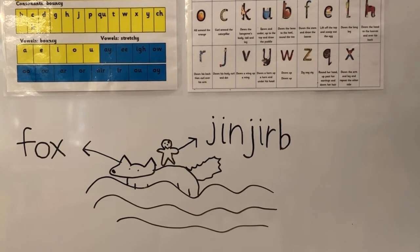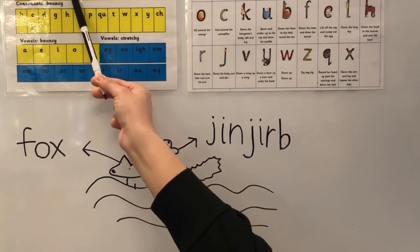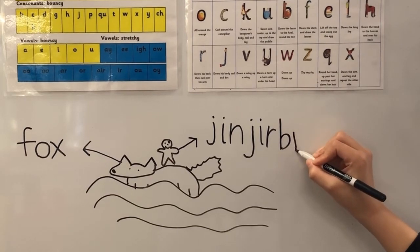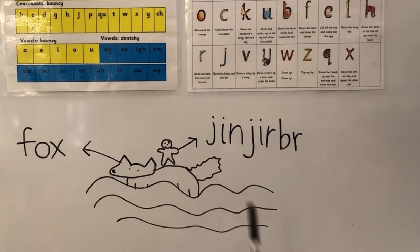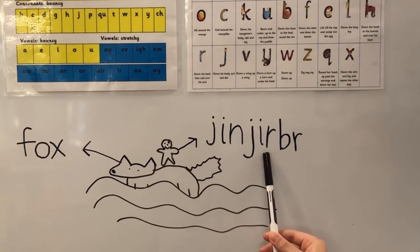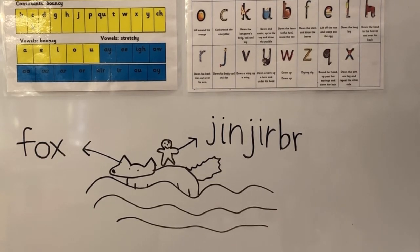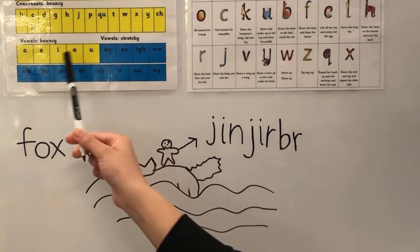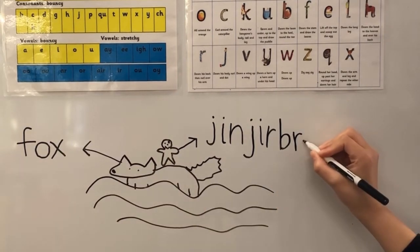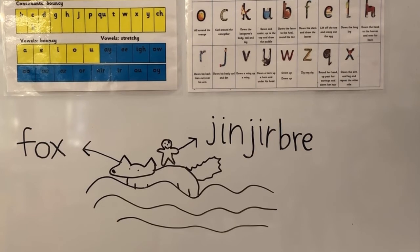Fantastic work - if you said it was R. Here it is on our sound chart. Down his back and curl over his arm. J, I, N, J, R, B, R. What's our next sound? Can you find it on the sound chart? Fantastic work - if you said it was E. Lift up the toe and scoop up the egg. And our last sound is D - can you find it on the sound chart? Good job - round his bottom, up his toe neck and down his tail.